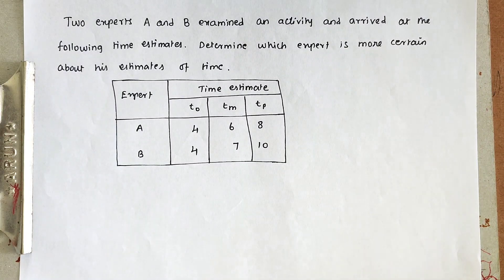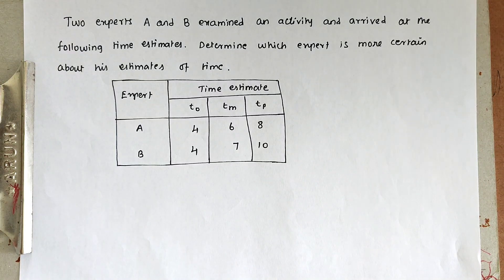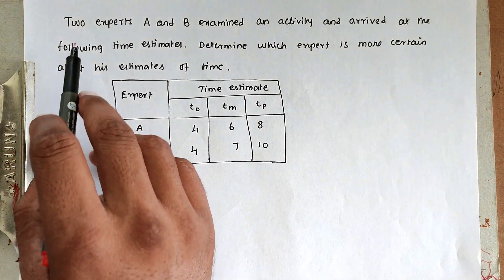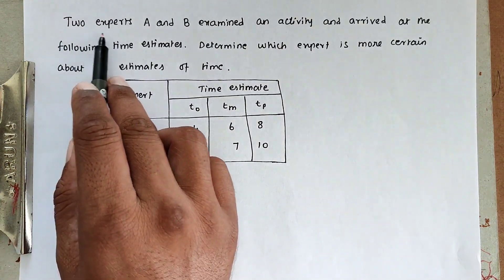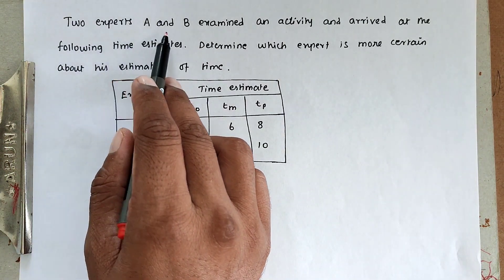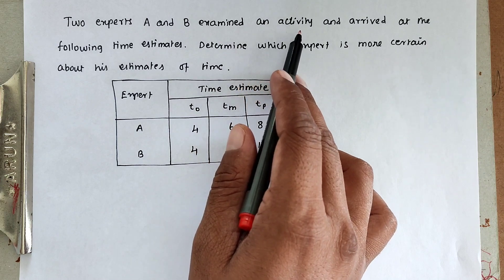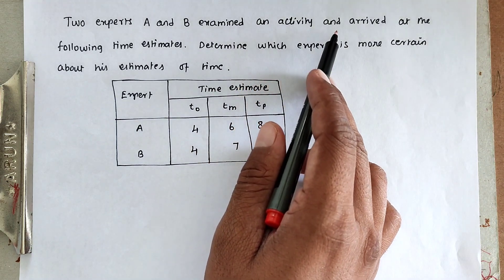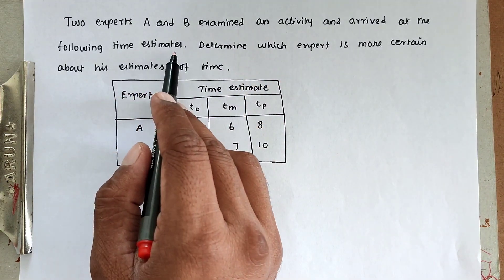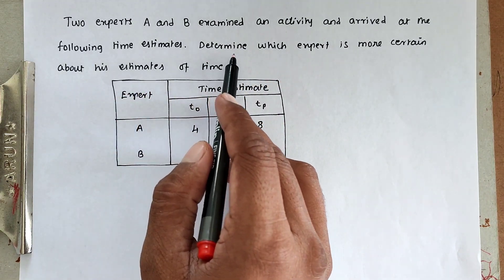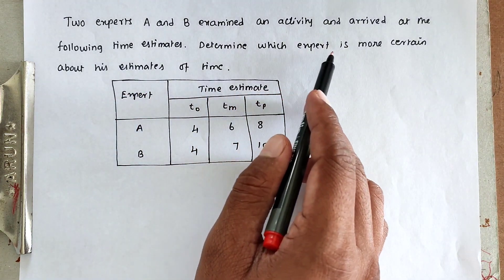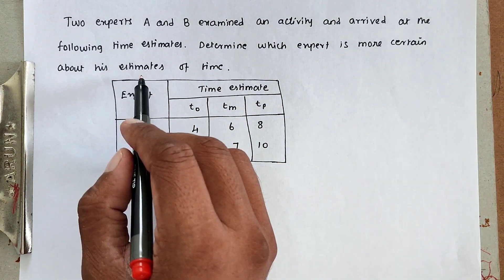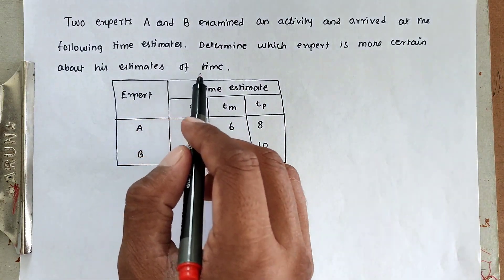Hello friends, welcome to Student Engineering Exam. Today we are going to see a problem related with construction planning and scheduling in the topic of operations research. The problem is: two experts A and B examined an activity and arrived at the following time estimates. Determine which expert is more certain about the estimate of the time.